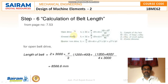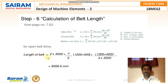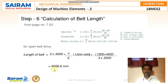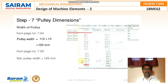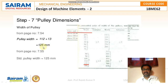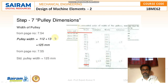Step 6: Calculation of belt length. For an open belt drive, the formula from the data handbook is: L = 2C + (π/2)(D + d) + (D − d)² / 4C. Substituting all known values, the belt length is obtained as 8566.6 mm. Step 7: Pulley dimensions. The pulley width is taken as 125 mm from the table.